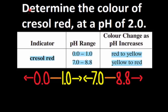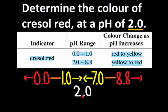The problem wants us to determine the color of crystal red at a pH of 2.0. 2.0 would go in between 1.0 and 7.0. All pHs greater than 1.0 and all pHs less than 7.0 is yellow, so the color of crystal red will be yellow.